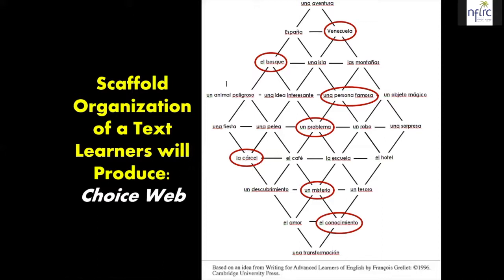Is it going to happen in the forest, an island, or the mountains? They chose the forest. What's going to be the big event — a dangerous animal, an interesting idea, a famous person, or a magic object? They choose. Then what's going to happen? Will there be a party, a fight, a problem, a robbery, or a surprise? By working through that series of choices, you give learners some basic language and structure that helps them generate the text.